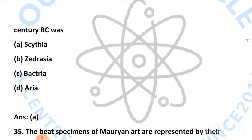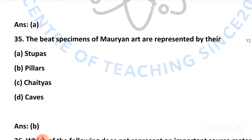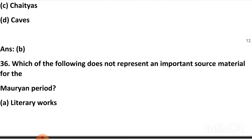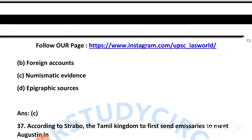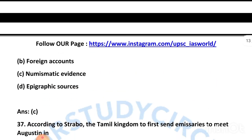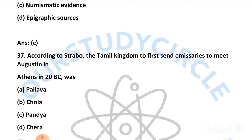Our next question is: the Indo-Greek kingdom set up in North Afghanistan at the beginning of the second century BC was — and the right answer is Bactria. Our next question is: the best specimens of Mauryan art are represented by their pillars. The next question is: which of the following does not represent an important source material for the Mauryan period? — and the right answer is numismatic evidence.